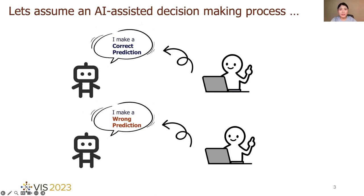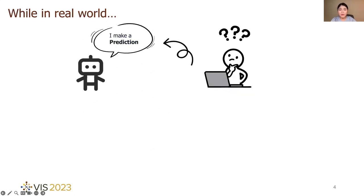Let's assume a simple scenario of AI-assisted decision-making. If people know that AI provides a correct result, they will adopt it. If people know that AI provides a wrong result, they will reject it. However, these simple scenarios are not realistic, as people usually don't know the correctness of the model predictions.